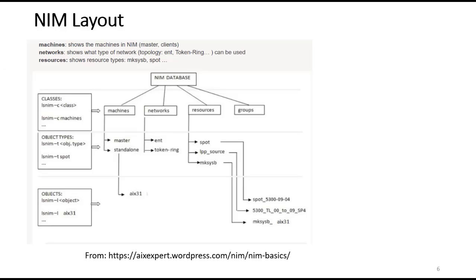If we look at the layout of NIM, basically what we have is the NIM database, and underneath that we have machines, networks, resources, and groups. Machines are typically the LPARs you're going to be supporting. Networks are the actual different subnets that go to the different clients. Your resources are going to be your spots and LPP sources and makesysbs. And then you could have groups of resources that you can work on together.